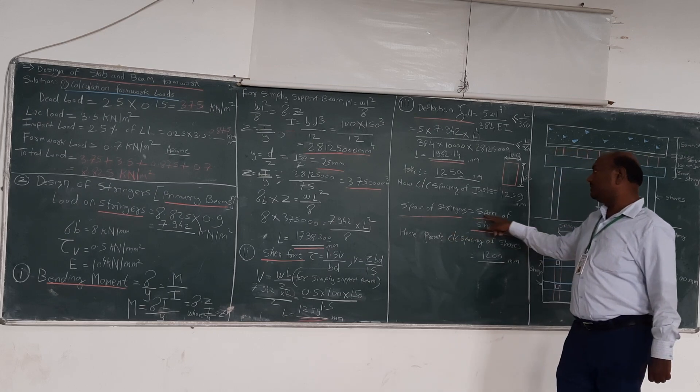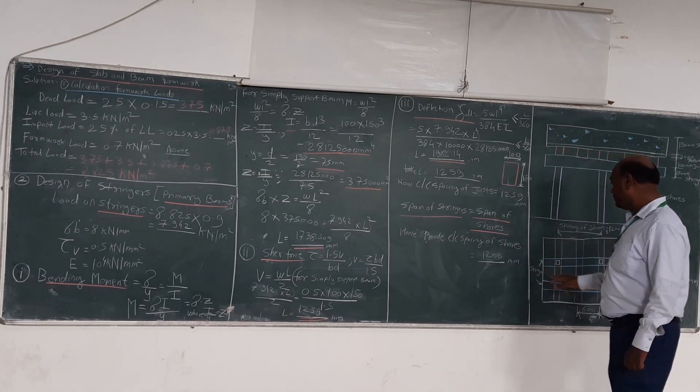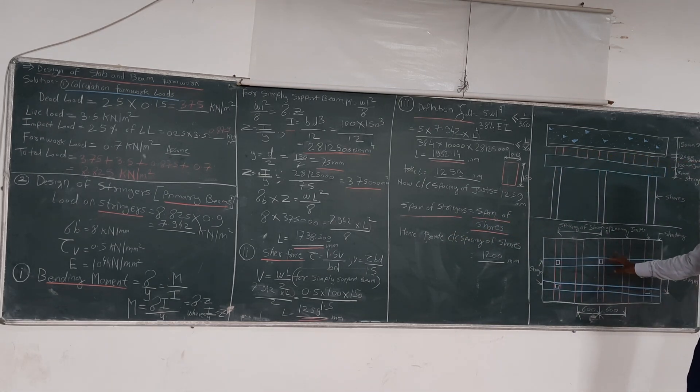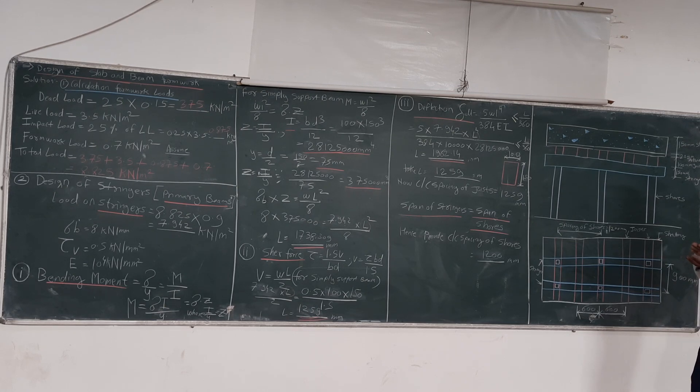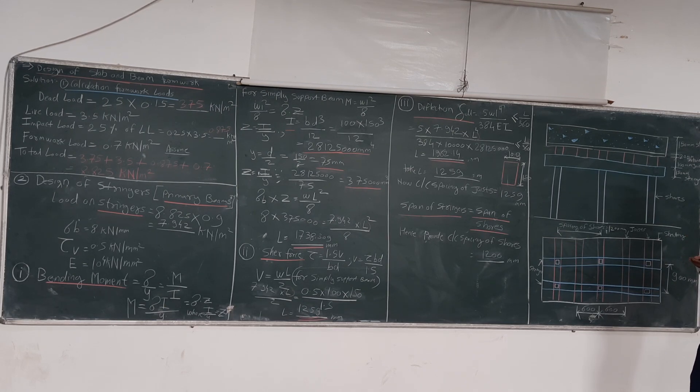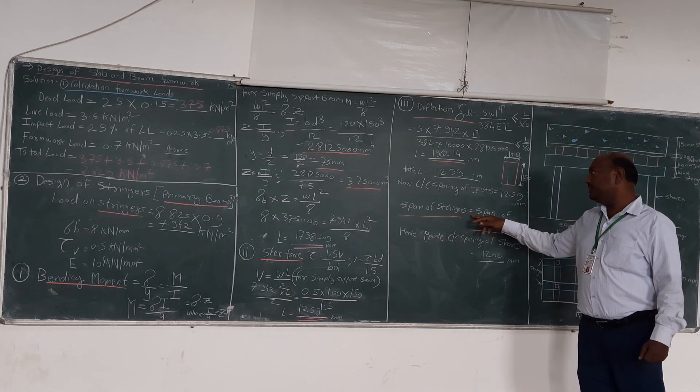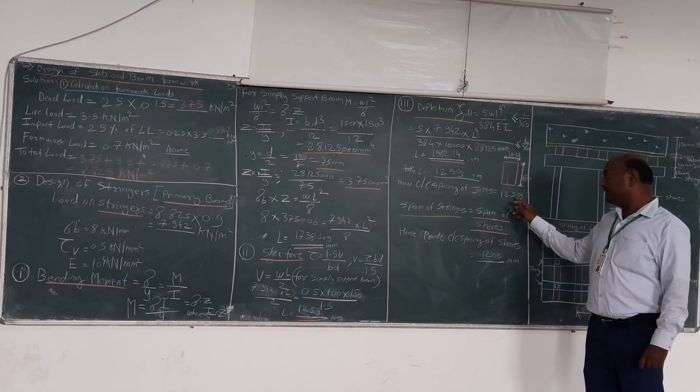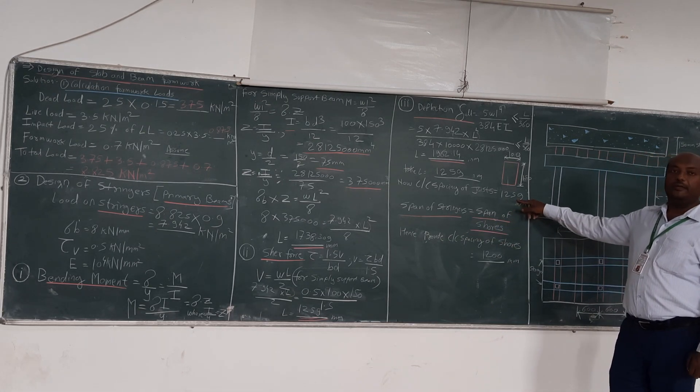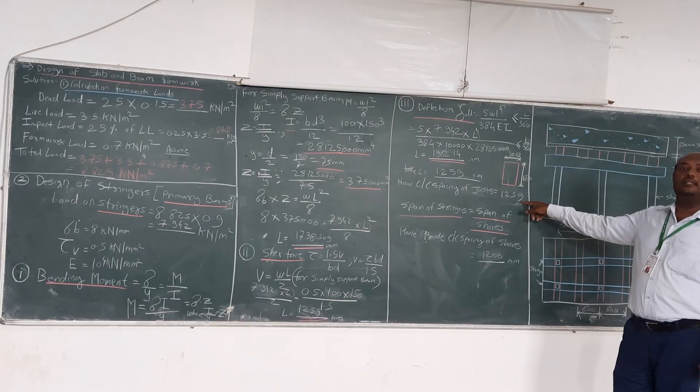Now, the span of the Stringer is equal to the span of the shore. The shore is the vertical prop which we have provided to support all the shuttering as well as the slab concrete. So the span of the Stringer is equal to the span of the shore, which we have presented here: 1859 mm rounded up to 1200.